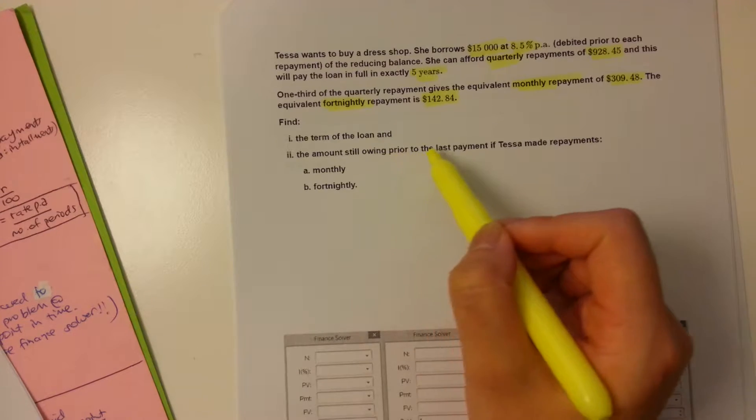To work that out, what we're going to do is we're going to once again use our finance solver, and we're going to see how much we still owe after paying 59 repayments. And to do that, we're going to set our N to 59. Everything else pretty much stays the same. The repayment's the same, $309.28. PPY and CPY are both 12, and we're going to hit Enter in future value, because we want to know how much we still owe after 59 repayments of that. So, just before the last repayment, how much do we still owe in principle?